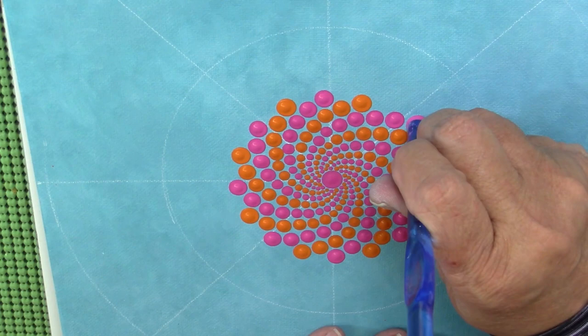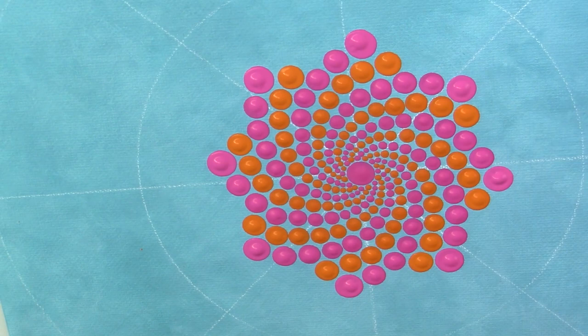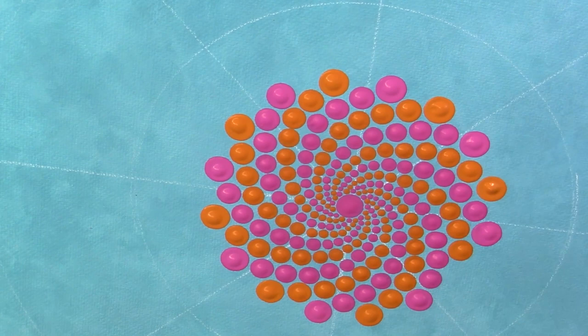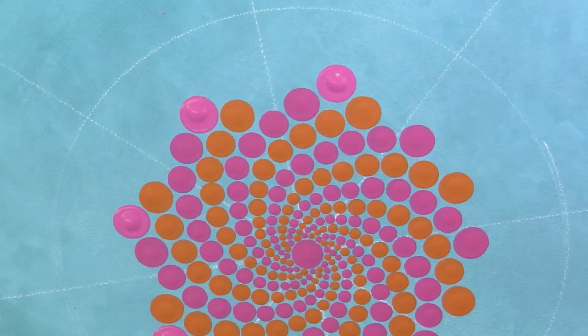You can really start to see that spiral now. Okay, and now I've moved up again. I'm using the L11, which is the 8 millimeter. And now I've moved up a size to the M13 9 millimeter, just taking it slow and moving up slowly in size.